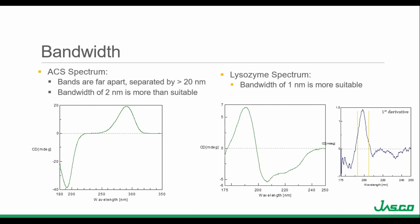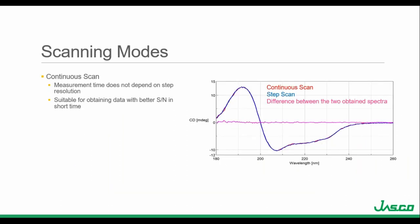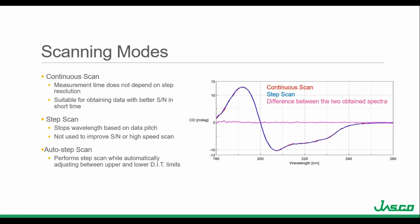The standard spectral bandwidth for CD measurements is 1 nanometer, but for high sensitivity measurements, the bandwidth can be adjusted to 2 nanometers to improve signal to noise because you get more light throughput. JASCO offers three different scanning modes. The continuous scan acquires a CD signal at each wavelength while moving across the desired wavelength range — this mode can be used to obtain data with better signal to noise in a shorter acquisition time. The step scan mode stops the monochromator at each wavelength based on the data pitch, making it much longer. The auto step scan mode performs a step scan while automatically adjusting the digital integration time for a constant signal to noise ratio.